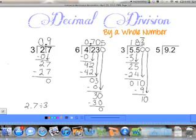And hopefully you remembered to put that repeating bar up top. Again, our last step, bring up that decimal point. And so our final answer becomes 1.83 with the 3 repeating.